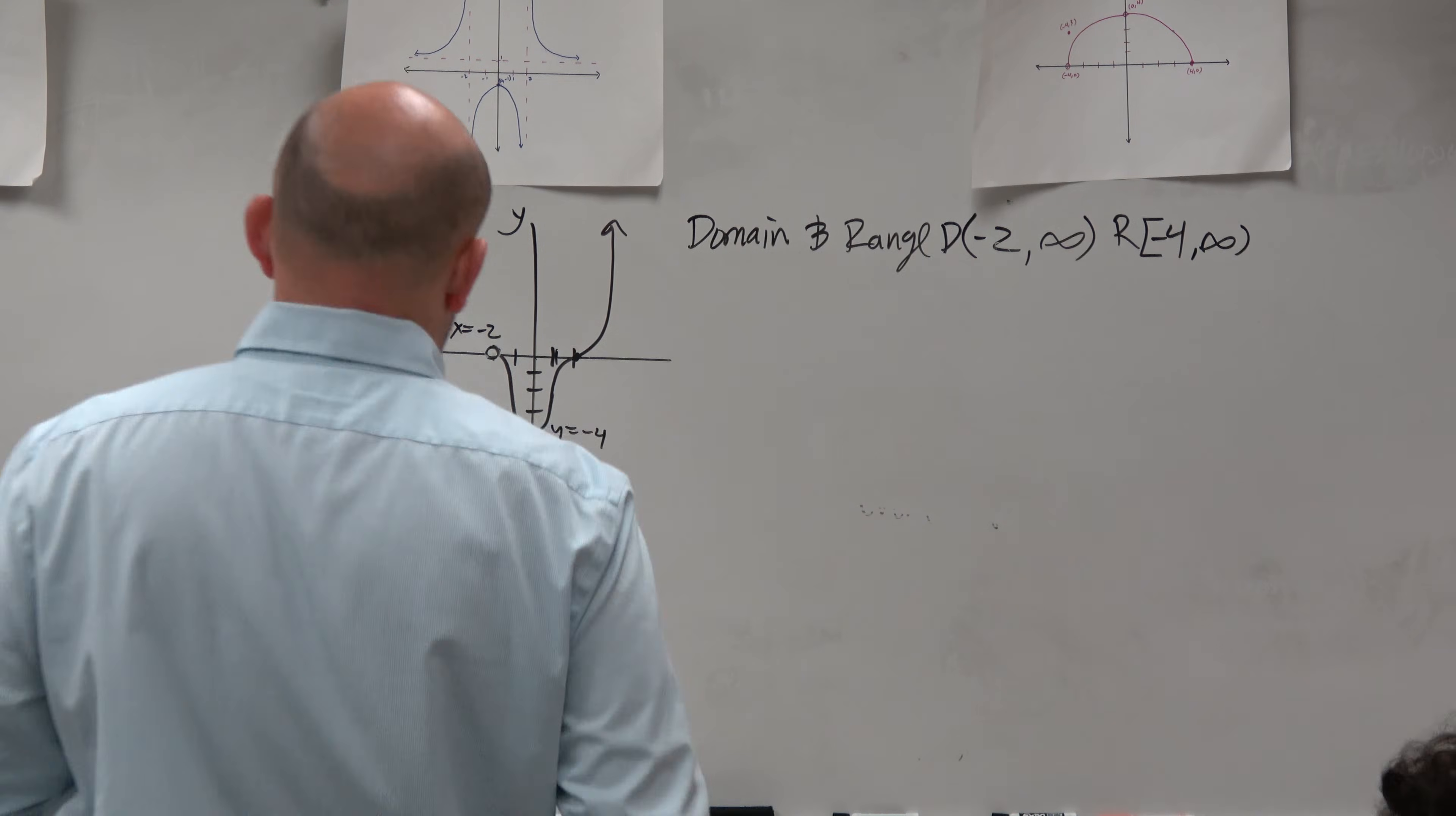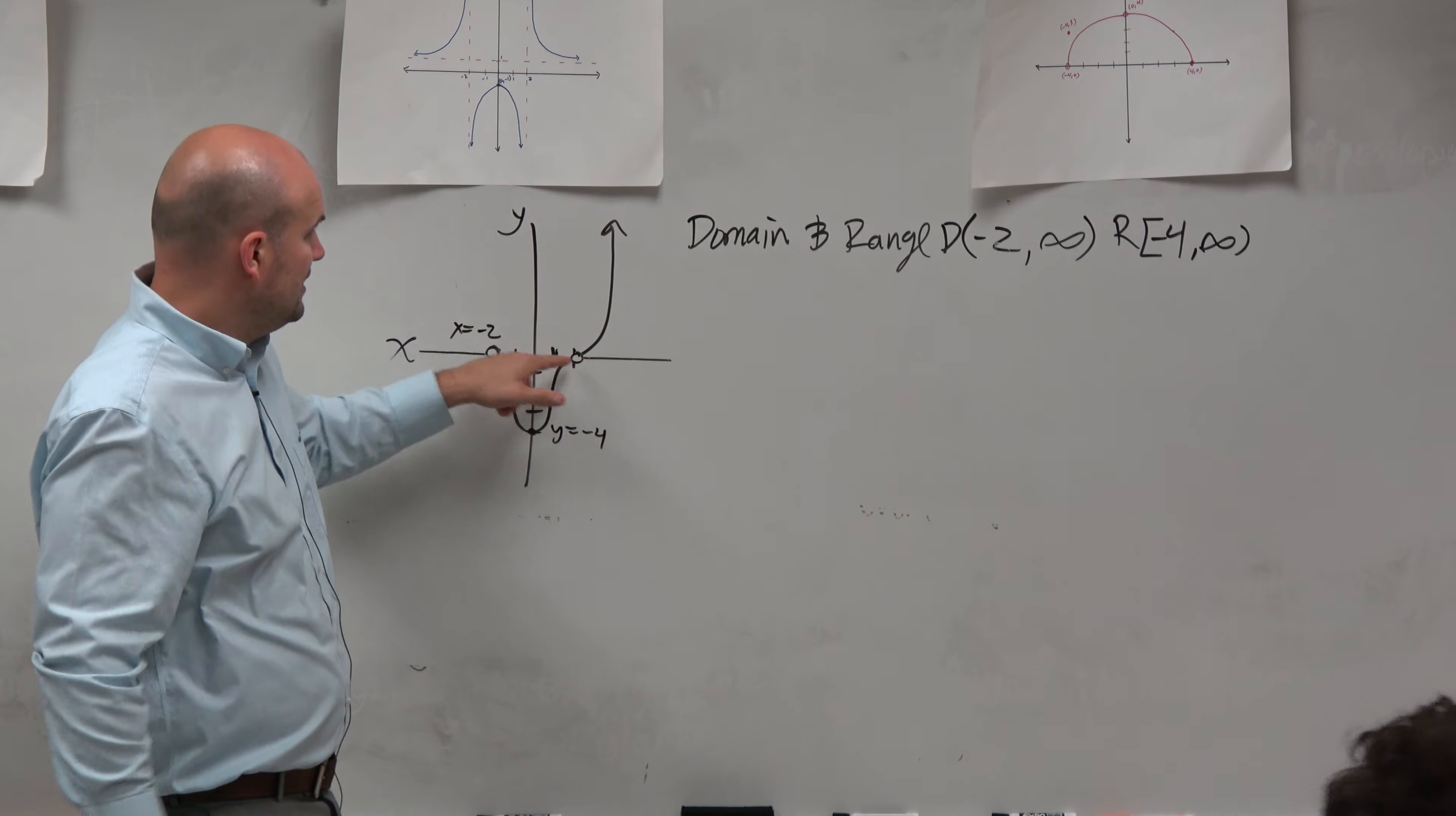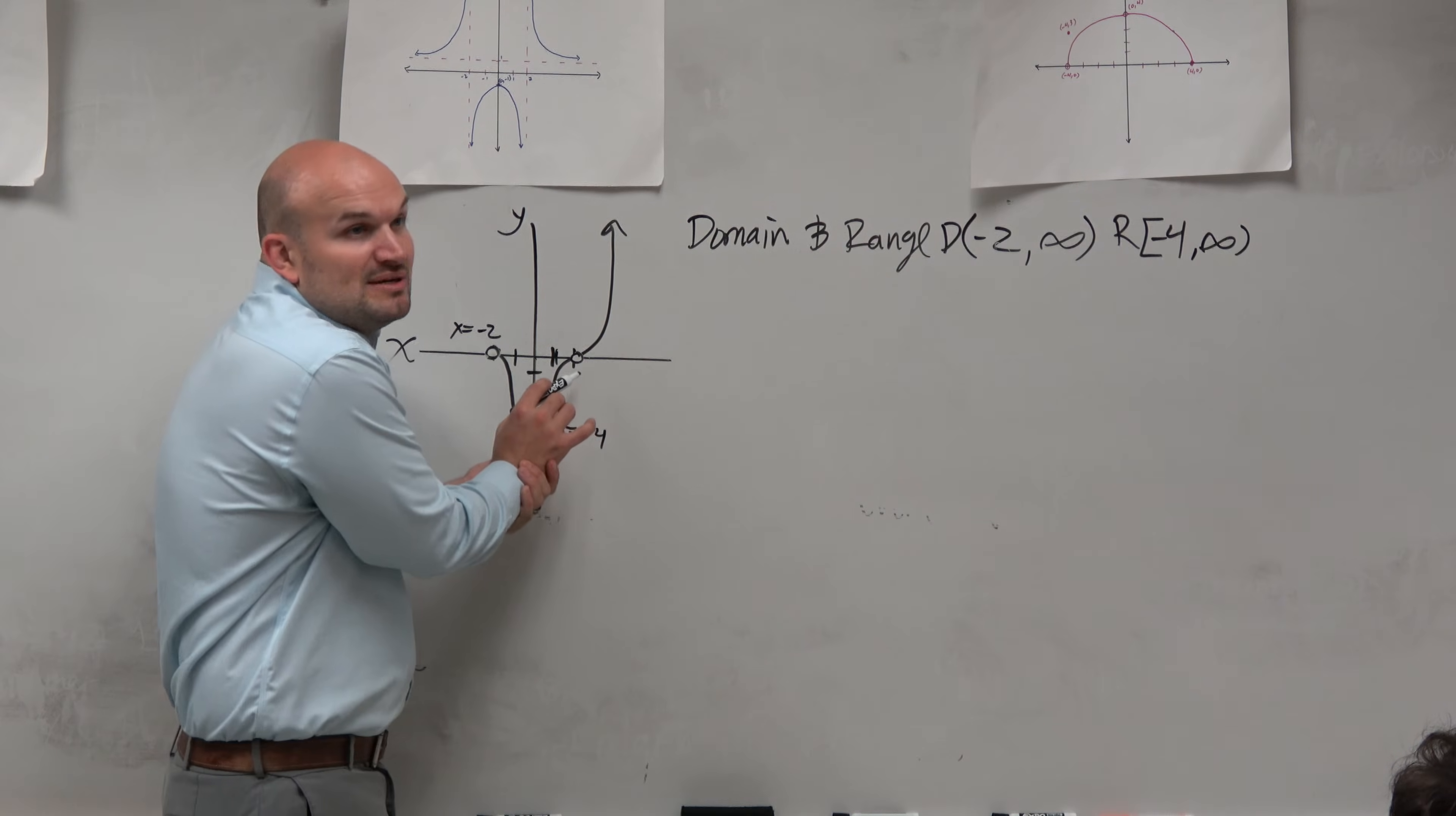Actually, there's one more thing I should probably mention to you guys. What if this point was like a hole? What if I change that to a hole? You've got to be careful. Because now, instead of it saying from negative 2 to infinity, we have to look out. There's another hole there. There's another x value that's not included. Would you guys agree?